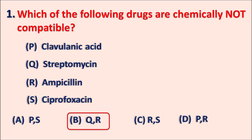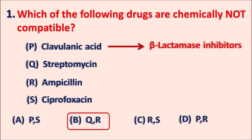Streptomycin and ampicillin are chemically not compatible. Streptomycin is an aminoglycoside antibiotic and ampicillin is an extended-spectrum penicillin. Clavulanic acid is a beta-lactamase inhibitor given with penicillin and is compatible — we have combinations like amoxicillin-clavulanate. Streptomycin, due to its amine groups, is a basic compound, while ampicillin has a free carboxylic acid making it acidic. When combined, the base and acid form a complex — a salt — resulting in loss of activity.